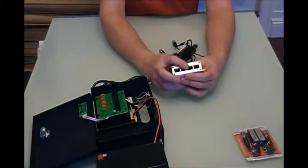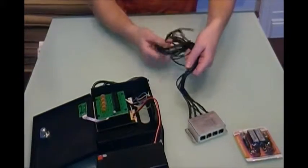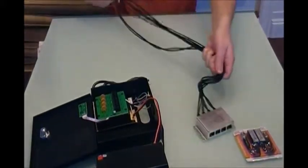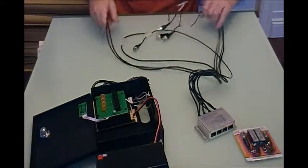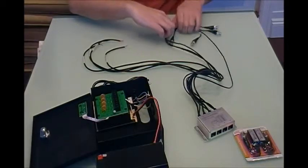Our RJ45 connectors on Cat5e go out towards the camera and three foot power leads. These three foot power leads we have will go into our power supply and we also have three foot leads that go to our DVR.